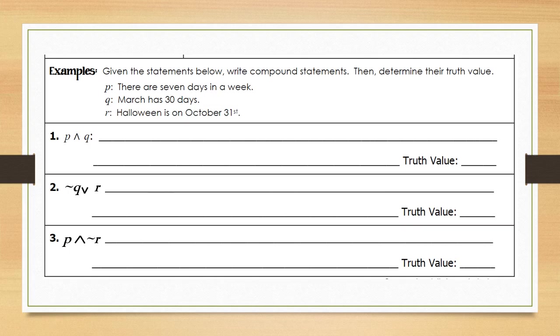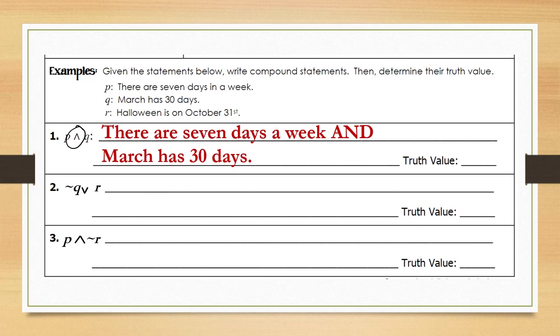To write p and q and determine the truth value, we write them in sentence form: 'There are seven days in a week' — the upside-down v symbol represents 'and' — 'and March has 30 days.' The truth value: 'there are seven days in a week' is true, connected with conjunction 'and,' while 'March has 30 days' is false. So with true and false, the overall truth value is false.